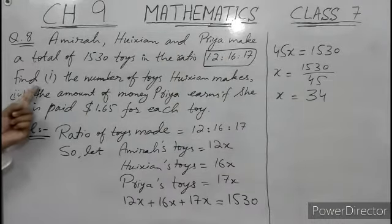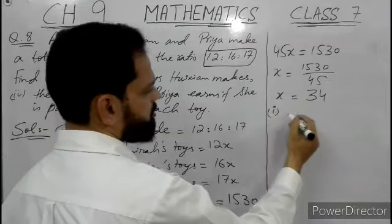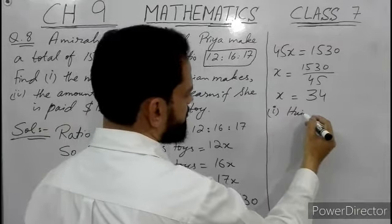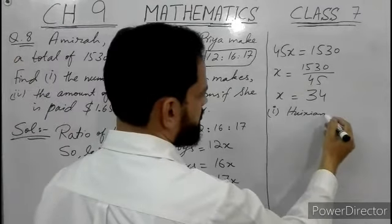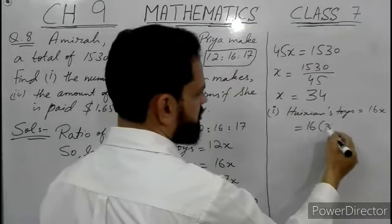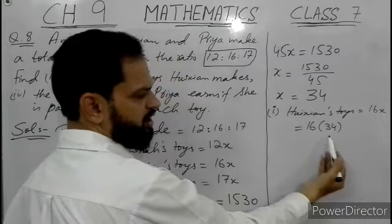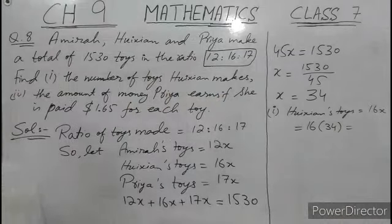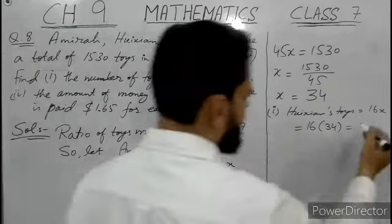Now we have to find the amount of toys Vixian makes. Vixian's toys are 16x. Replace the value of x — write it in brackets to show multiplication. Using a calculator, 16 multiplied by 34 gives 544.